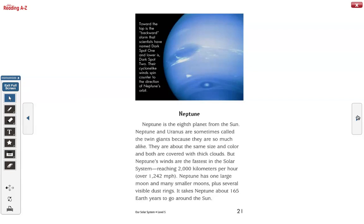Neptune. Toward the top is the backward storm that scientists have named Dark Spot 1 and lower is Dark Spot 2. Their cyclone-like winds spin counter to the direction of Neptune's orbit. Neptune.